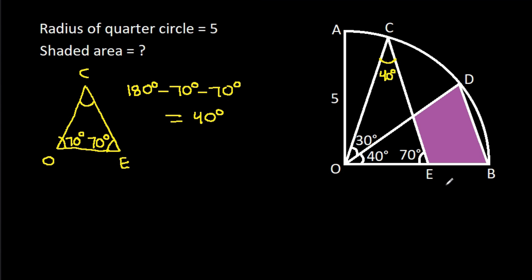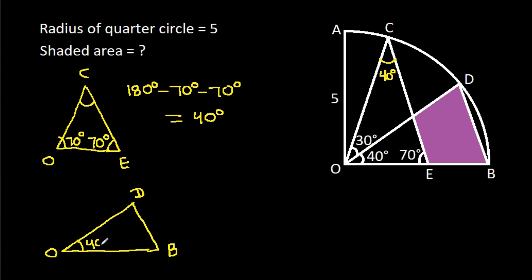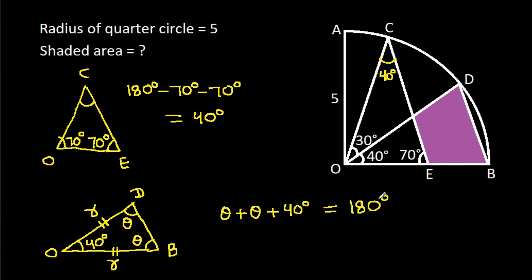In triangle BOD, this angle is 40 degrees, and BO is equal to DO — that is the radius of the quarter circle — which means these two base angles will be equal. So theta plus theta plus 40 degrees equals 180 degrees, giving us 2·theta = 140 degrees, so theta is 70 degrees. These two angles are each 70 degrees.